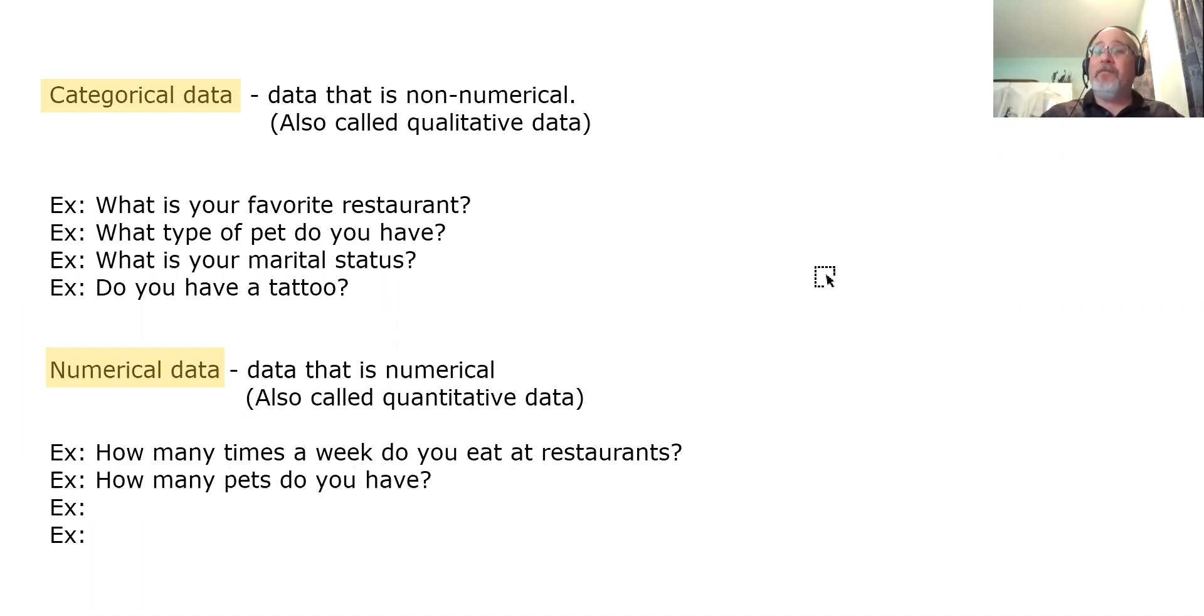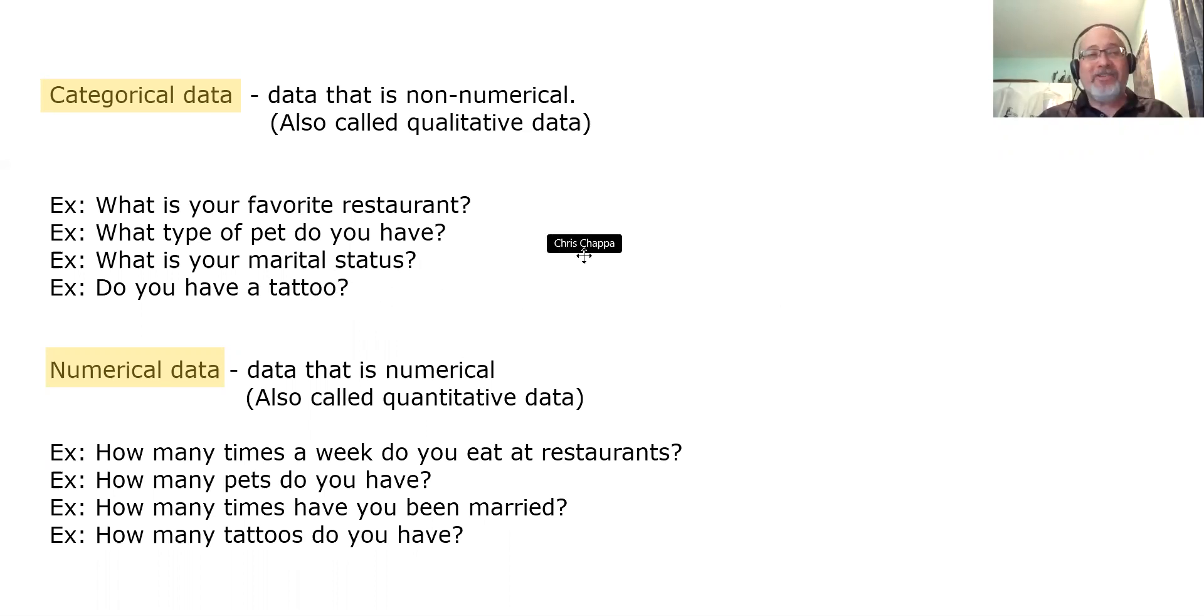How many pets do you have? That would gather numerical data because the answers would be numbers, as opposed to what type of pet do you have, which would be categorical. How many times have you been married? That's a question you would answer with a number, so it gathers numerical data, as opposed to what is your marital status, which does not elicit a numerical answer. How many tattoos do you have? That's answered numerically, hence it gathers numerical data, as opposed to do you have a tattoo, which would elicit a yes or no answer.